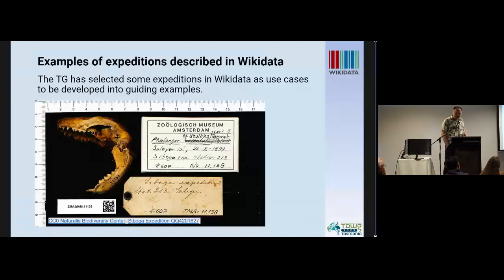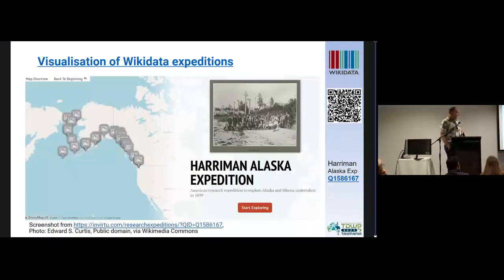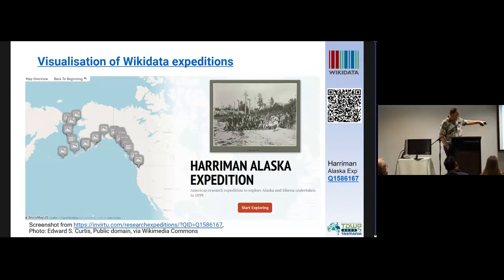We have been choosing a few examples of expeditions to describe, to give us guiding examples and to test out the recommendations we are developing. The Harriman Alaska expedition is the model expedition we've been using. Here we have extracted from the 'via' property in Wikidata the itinerary of where the expedition was visiting. I think it's mostly Siobhan who has been working on this one.